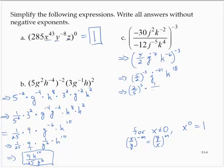And here I've got a 1 over j to the 21st. And I still have the k to the 18th. Now, 2 to the 3rd is 8. 5 to the 3rd is 125. And then I would have a k to the 18th in the numerator and a j to the 21st in the denominator.